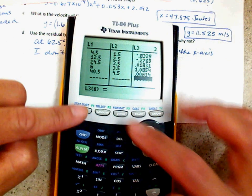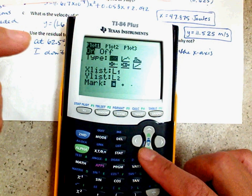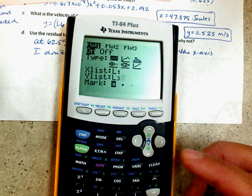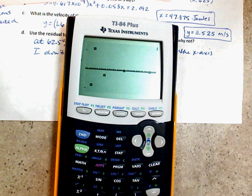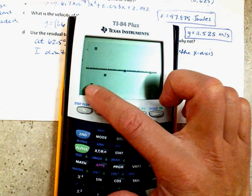Now, go to second, Y equal. Change your L2 to L3. Because that's where your residual is. And hit zoom 9. Wow. You got two points on there. That's not bad. But the other three is so far off.